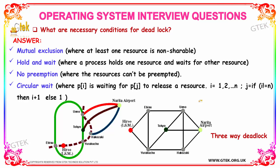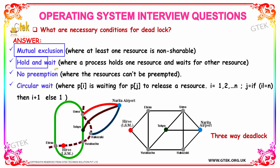The next question is: what are the necessary conditions for a deadlock? At what conditions will the deadlock occur? The conditions are mutual exclusion, hold and wait, no preemption, and circular wait.